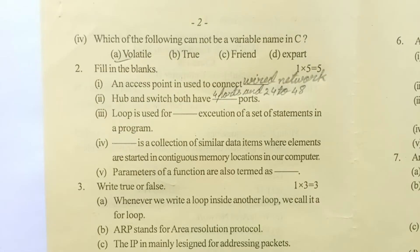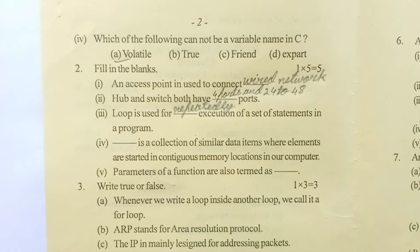Question number four: this is a collection of similar data items where elements are stored in contiguous memory locations in our computer. Answer is an array. Question number five: parameters of a function are also termed as formal parameters.